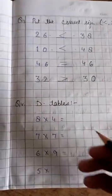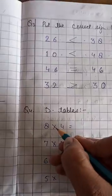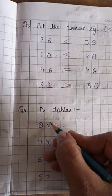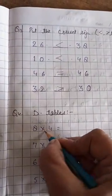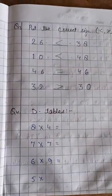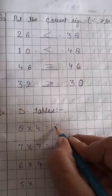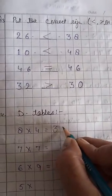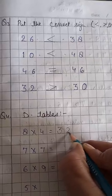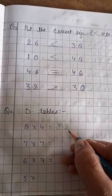Now is D tables. Dodgingly tables. 8 fours are? Yes, read the table till 4. 8 ones are 8. 8 twos are 16. 8 threes are? 24. 8 fours are? 32. Right here. 32. Students, write one number in one block. Okay? Neatly.